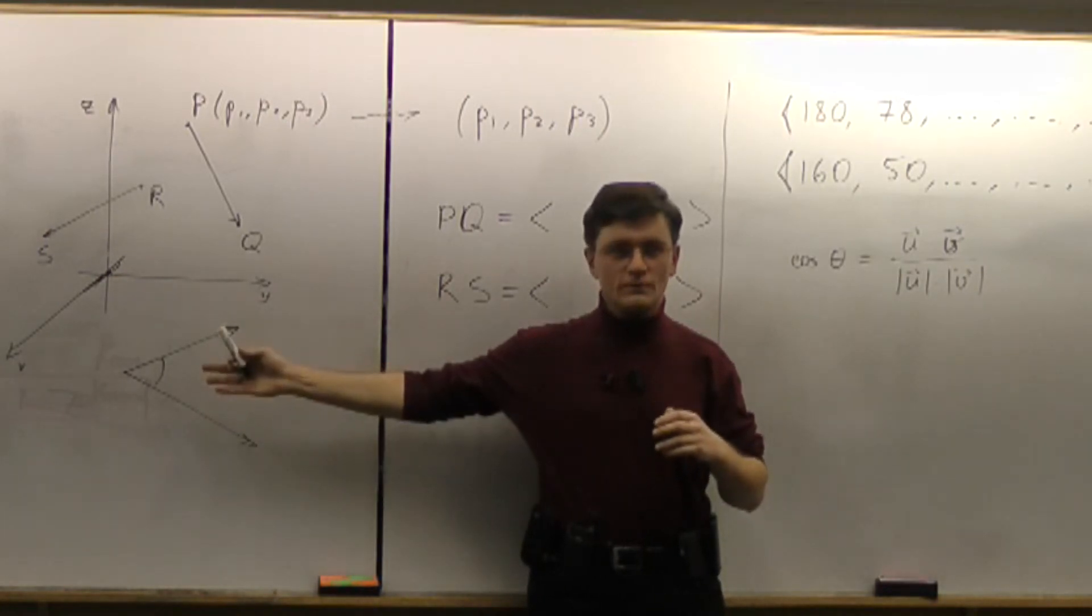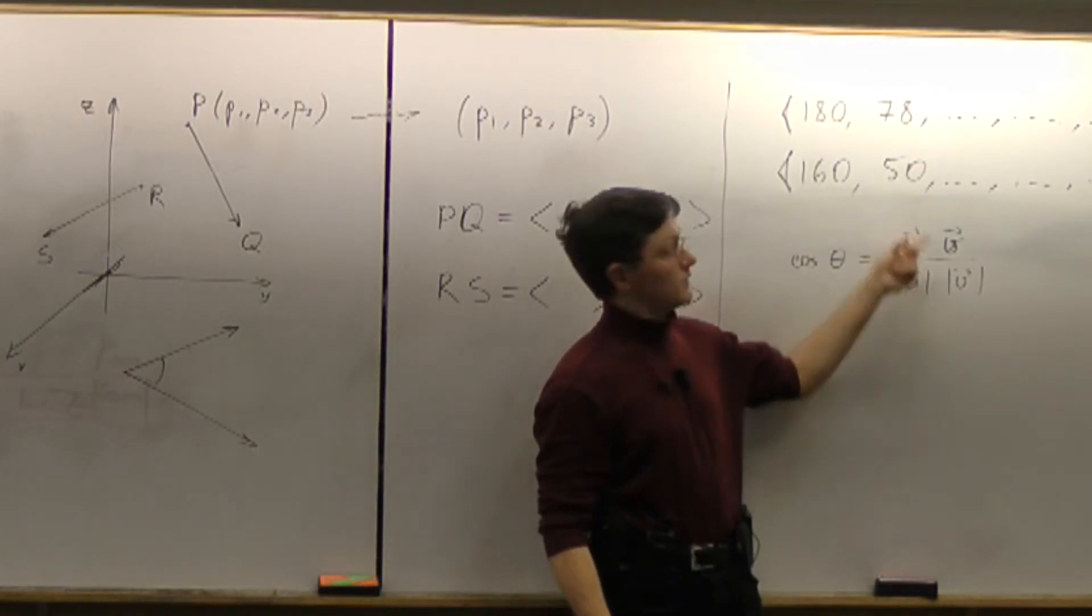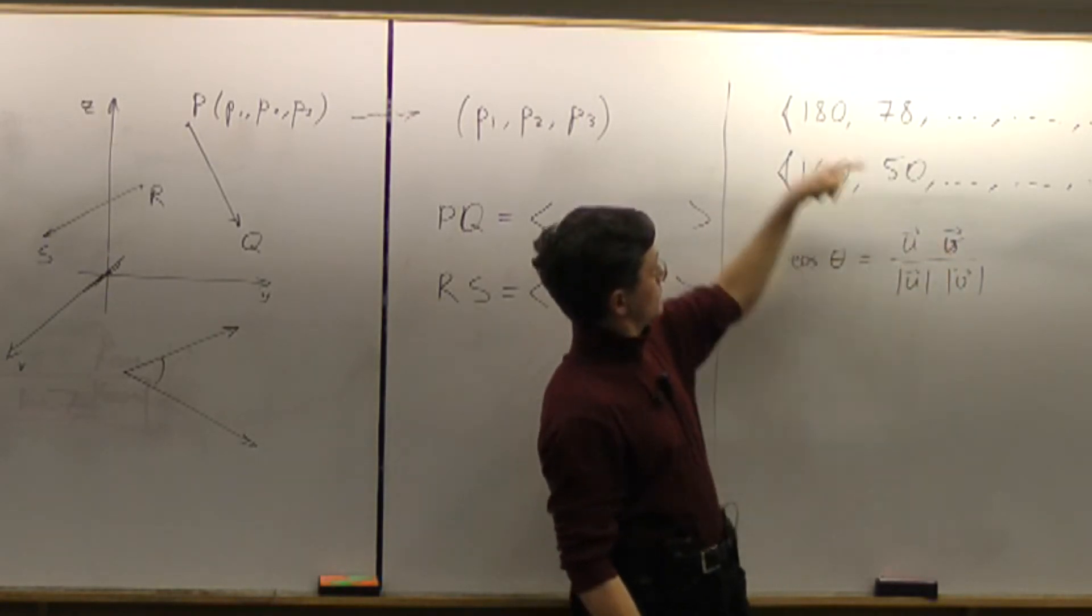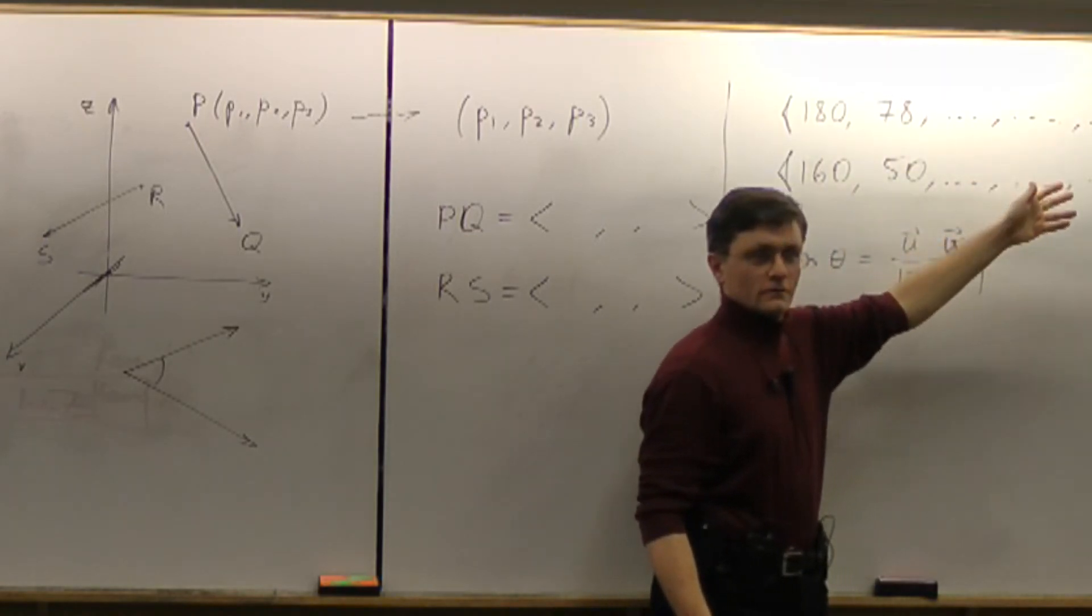What is that angle going to be for you? Well, it's going to be this: take those things, make dot product. How do we make dot product? This times that, plus this times that, plus this times that. The usual formula.